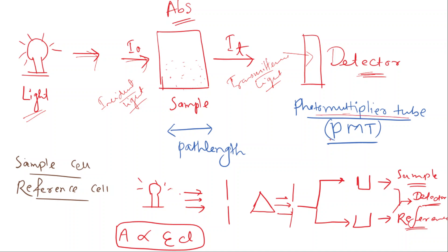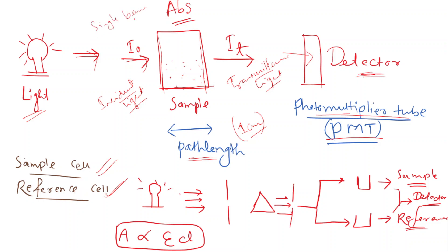We have a multiplier tip. The sample is placed in a cuvette. A cuvette is small and can be made of quartz or glass. The path length of the sample cell is one centimeter. There is the single beam configuration for this setup.